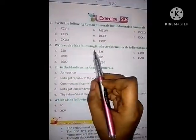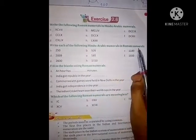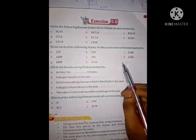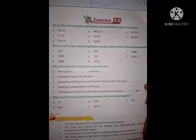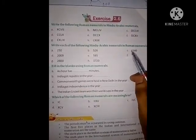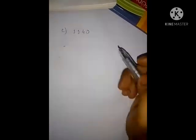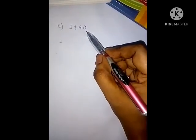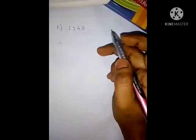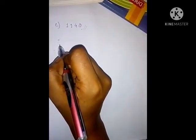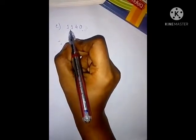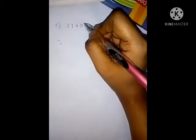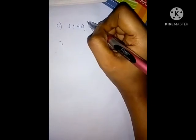Question number 2: Write each of the following Hindu-Arabic numerals in Roman numerals. Hindu-Arabic numerals are given and we have to write them in Roman numerals. Let's take example C. To write the Roman numeral of this Hindu-Arabic number, we have to write it in expanded form.